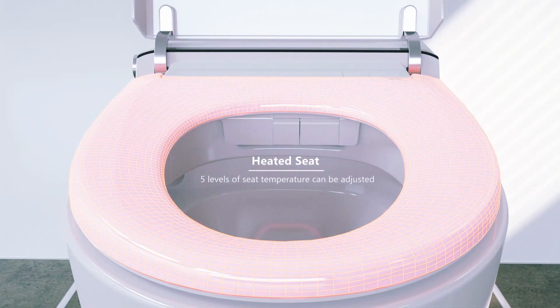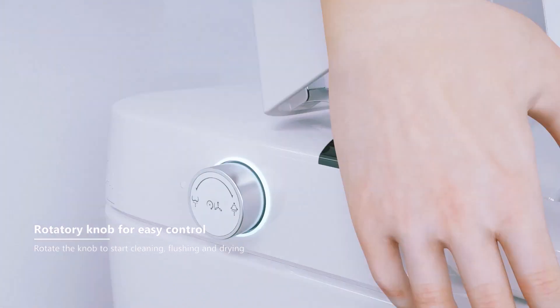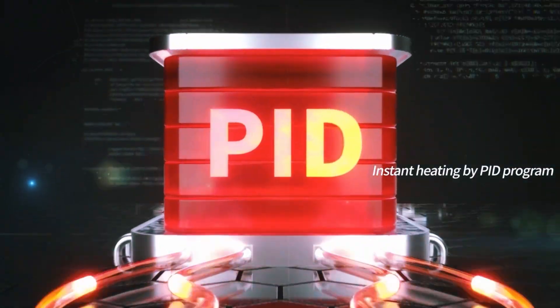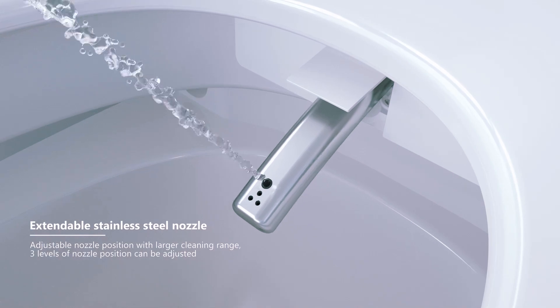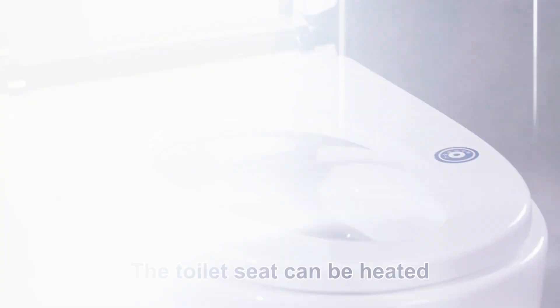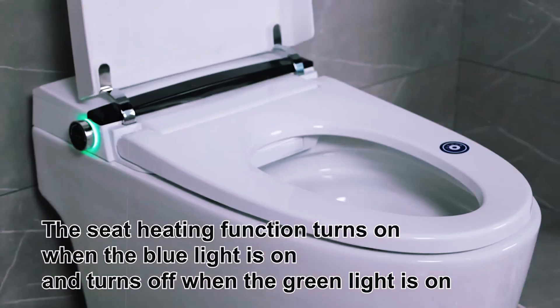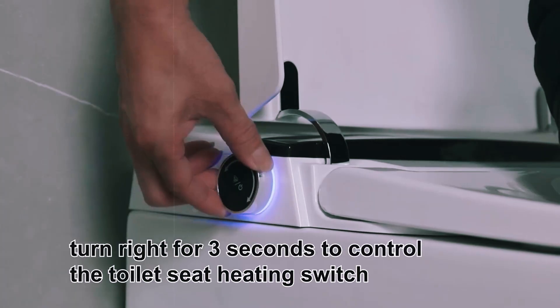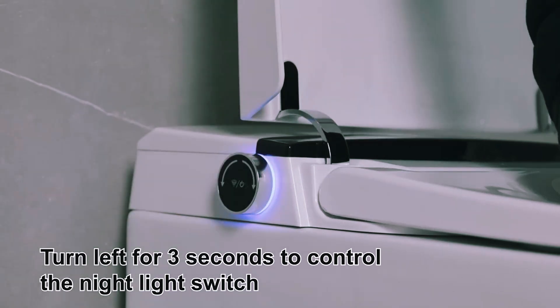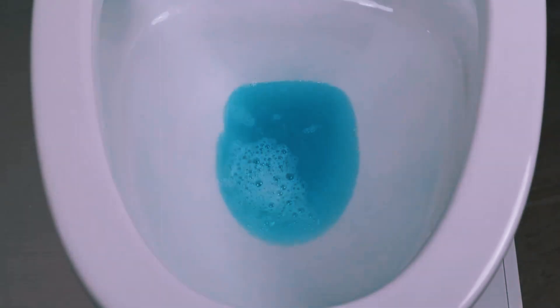Another drawback is the higher upfront cost. Tankless toilets are generally more expensive than traditional models, both in terms of purchase price and installation. Plus, some models require electricity to power the flush valve, which means you could face issues during a power outage. Finally, installing a tankless toilet may require some plumbing adjustments to ensure proper water flow, which could add extra cost and complexity.